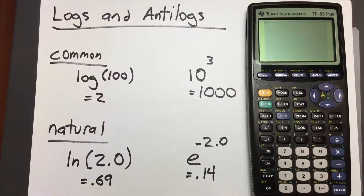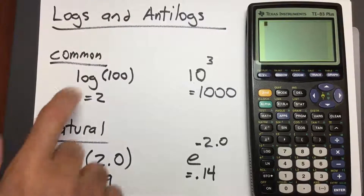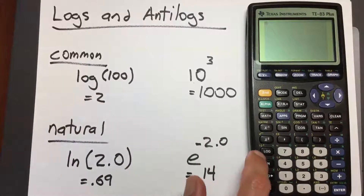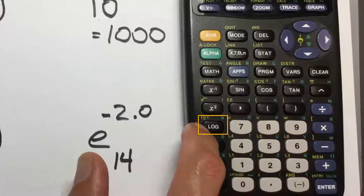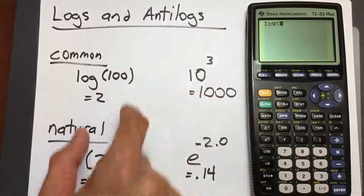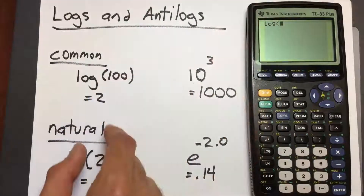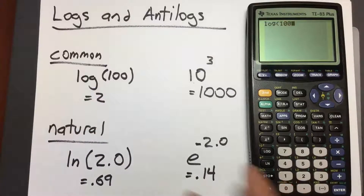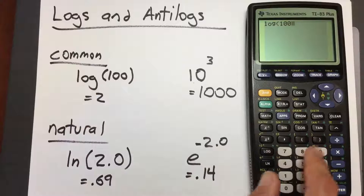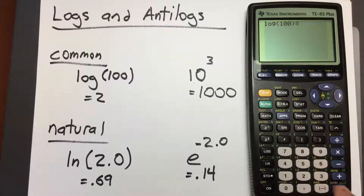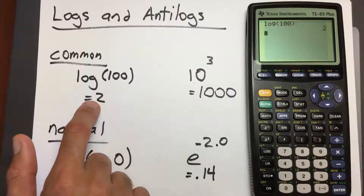For those of you with the TI-83, here's how you take a logarithm. To take the common log, look for the button that says LOG on the left side. Press it to place LOG with open parentheses into the calculator. Enter the number 100, close the parentheses, and press enter. We get 2 as our answer.